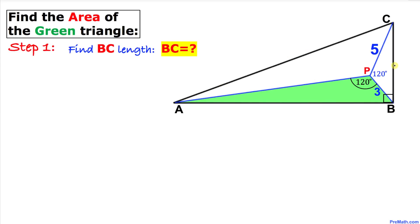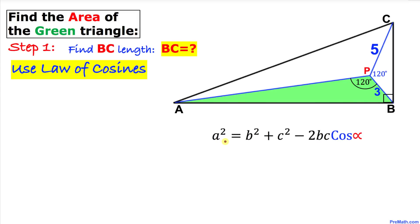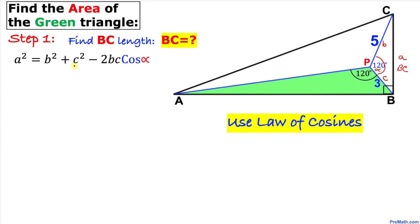Let's go ahead and find the length BC. We will use the law of cosines to calculate BC. Here's the law of cosines: A² = B² + C² − 2BC·cos(α). In our case, 120 degrees is our angle alpha, and the side we are going to calculate is BC. I'm going to call this side lowercase B and this lowercase C. So BC² = 5² + 3² − 2 × 5 × 3 × cos(120°).